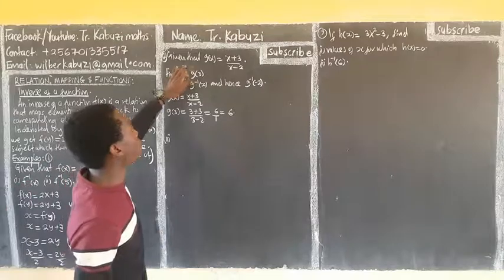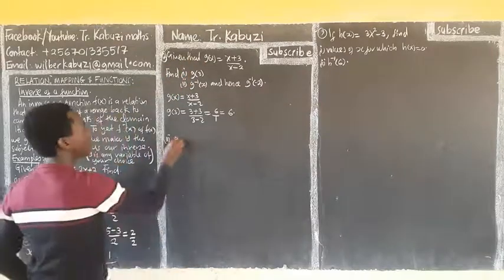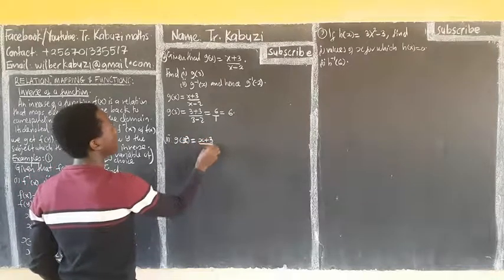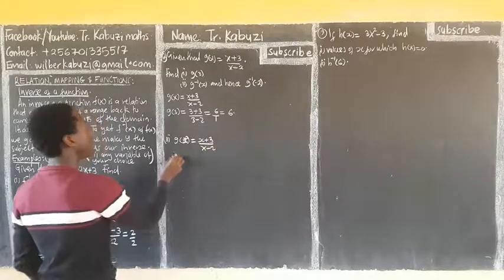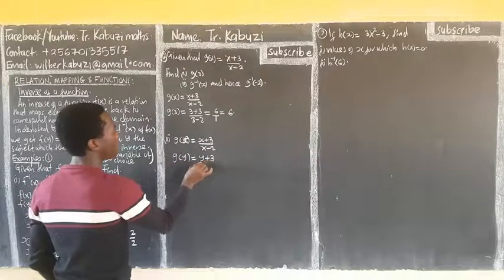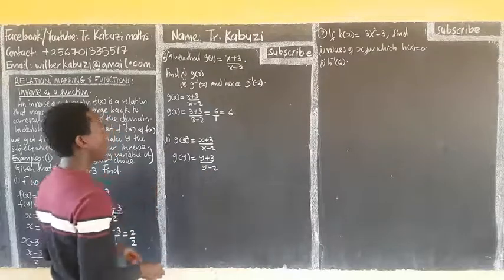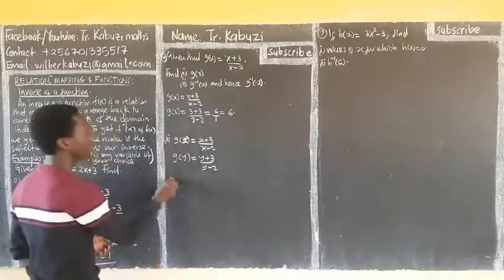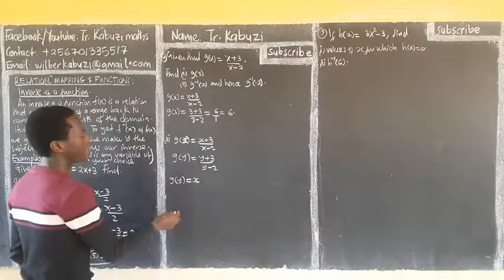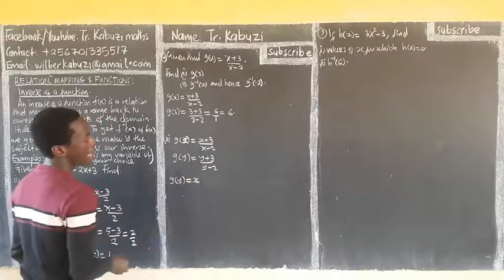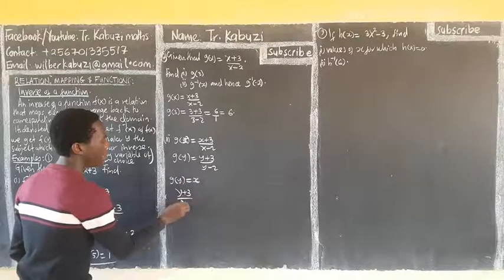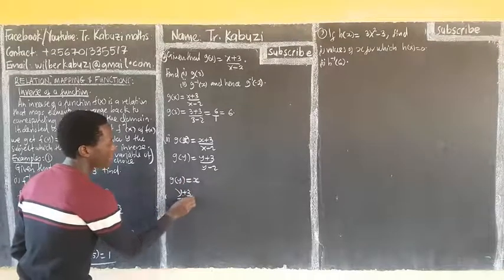Now I want to get the inverse of g. What I do, I get g of y first. g of x is x plus 3 over x minus 2. Then my g of y will be, where I replace x with y: y plus 3 over y minus 2. Now after this, I put g of y equal to x. So my g of y, which is y plus 3 over y minus 2, is equal to x.